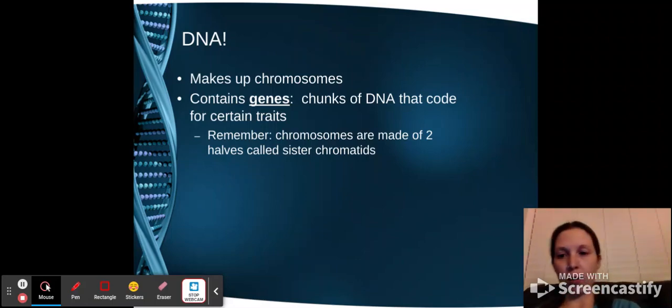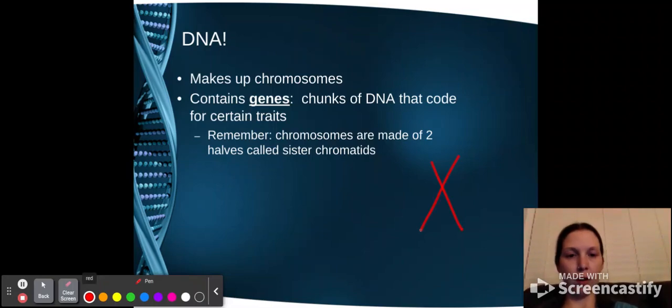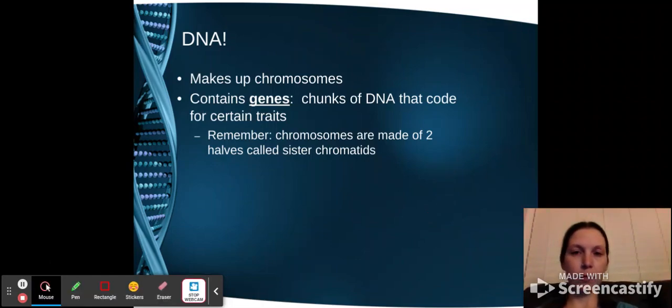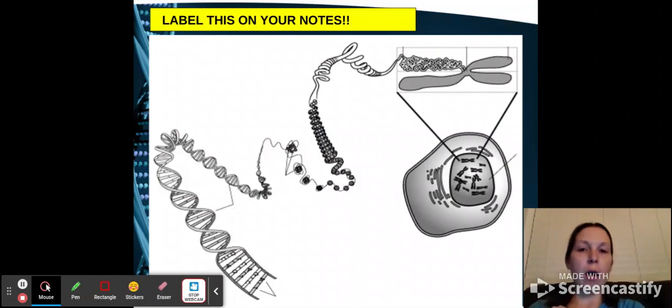So those are what make it look like your X shape with that centromere right there in the middle. I'm going to get these little boxes to pop up. You need to label on the picture in your notes. Pause this here and label these parts of your DNA, chromosomes, chromatids, all of that. Get these labeled so you have them for later reference.